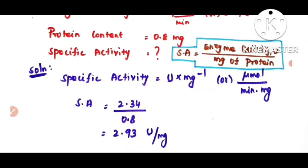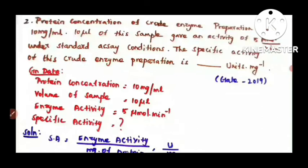Since protein is given in the same unit mg, you can substitute directly. So specific activity equals 2.34 divided by 0.8, which equals 2.93 units per mg. The second problem is: the protein concentration of a crude enzyme preparation was 10 mg per ml. 10 microliters of this sample gave an activity of 5 micromoles per minute under standard assay conditions.